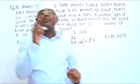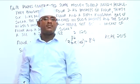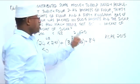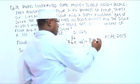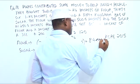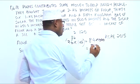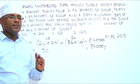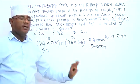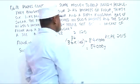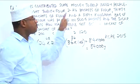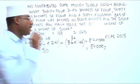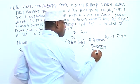Now, how many grams make 1 kilogram? 1,000 grams make 1 kilogram. So if we want to change the 84 kilograms to grams, we multiply by 1,000, giving us 84,000 grams. This is the total amount of flour we have in grams. To find how many packets we get, with each packet being 500 grams, we divide by 500 grams.